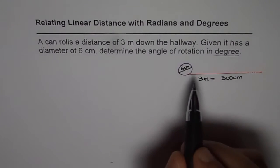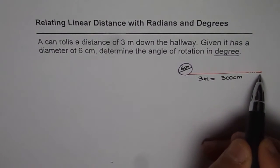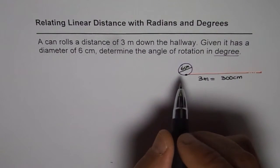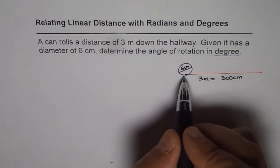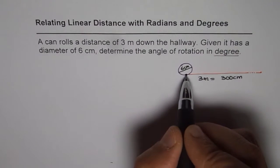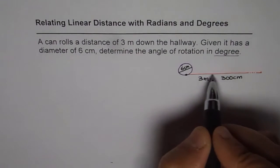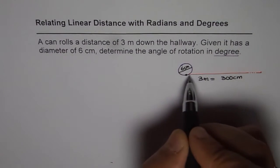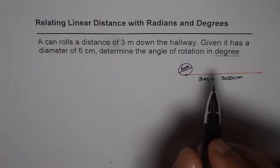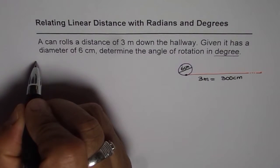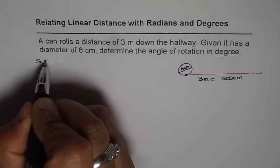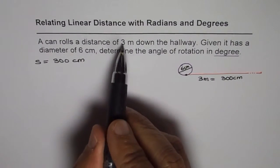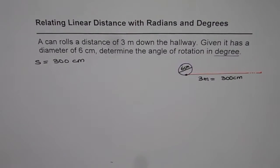When we say the distance covered is 300 centimeters, it means that if you consider a point on the can, as the can rolls, that point moves along and covers a linear distance of 300 centimeters horizontally. So we have a linear distance s = 300 centimeters.